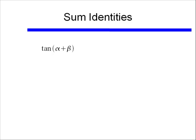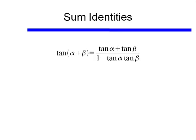Last one: tangent. What happens when we add two angles and put it into our tangent function? The tangent of alpha plus beta is equal to — this looks a lot more complex — tangent of alpha plus tangent of beta, all over 1 minus tangent alpha times tangent beta. So this one has a fraction, and the two terms in the numerator are added, while the terms in the denominator are subtracted. Again, this is for tangent of alpha plus beta.